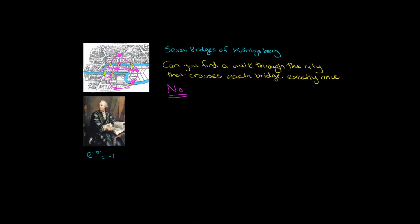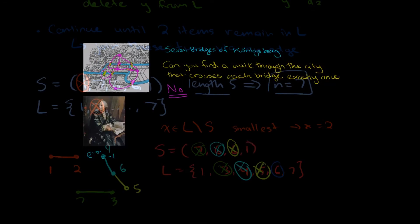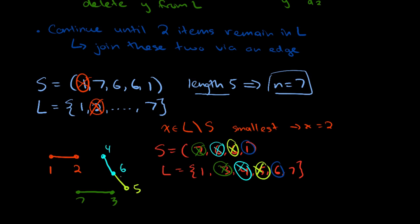And Euler is the one who solved this problem and he solved it using graph theory. And join up six and one. Okay, well six is already here and so is one.